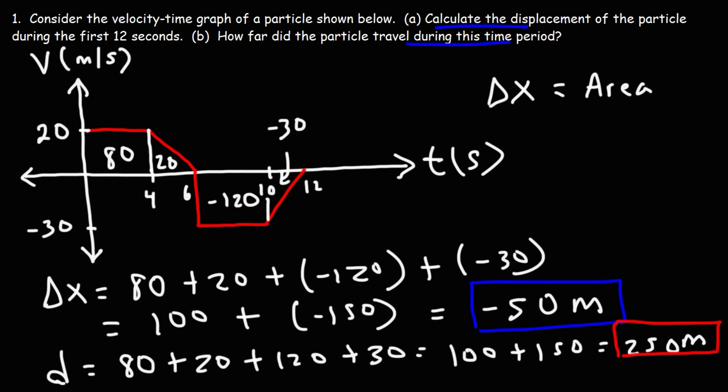So now you know how to calculate the displacement of a particle using a velocity time graph. Just remember, the displacement is the area under the curve.